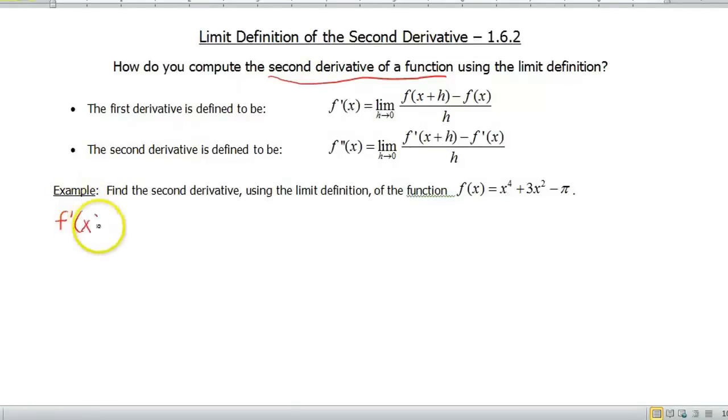Okay, so f prime of x is equal to the limit h approaches 0. So by now you should be old pros at figuring out this limit definition. So we have to plug x plus h into the two pieces of our function where I see an x. So that'll be x plus h to the fourth power plus 3 times x plus h squared minus pi.